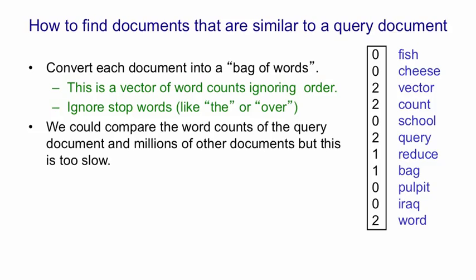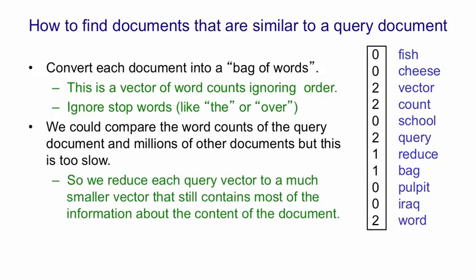We could compare the word counts of the query document with the word counts of millions of other documents, but that would involve comparing quite big vectors. In fact, we used vectors of size 2,000, so that would be slow. Alternatively, we could reduce each query vector to a much smaller vector that still contained most of the information about the content.